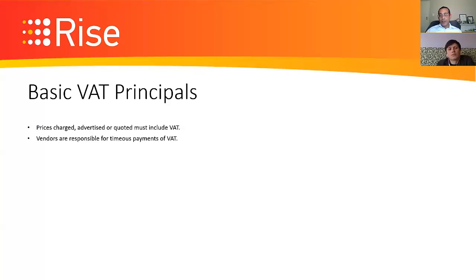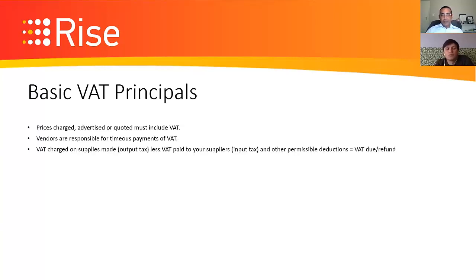Vendors are responsible for making payments on time — it is not SARS's responsibility to ensure you submit your VAT returns. VAT payments are due by the 25th of the following month after the end of your VAT period. The VAT charged on supply is your output VAT; less the VAT paid to suppliers — your input tax — and other allowable deductions, equals the VAT you pay to or receive as a refund from SARS.